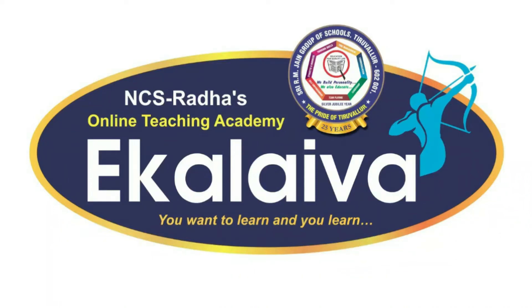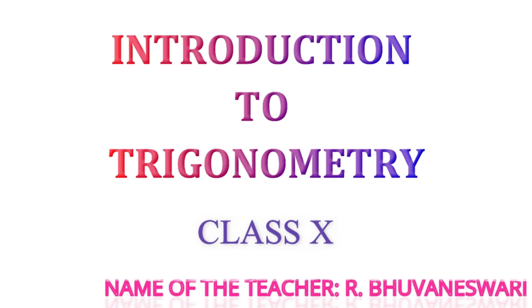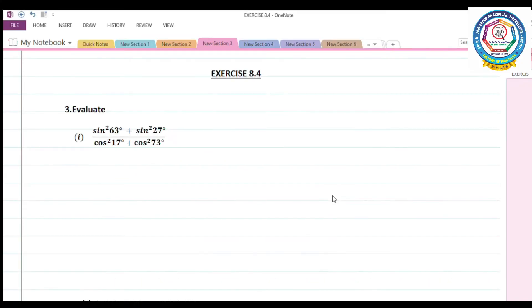Welcome to online class. Exercise 8.4, third question. Evaluate. First subdivision: sin²63° + sin²27° divided by cos²17° + cos²73°.